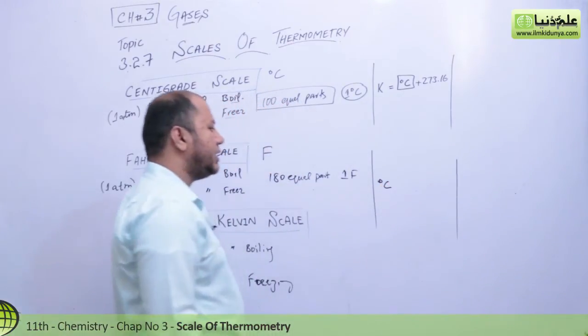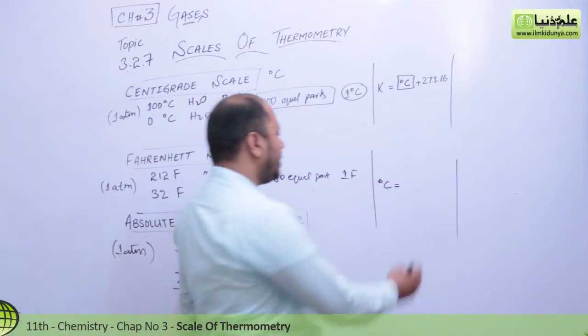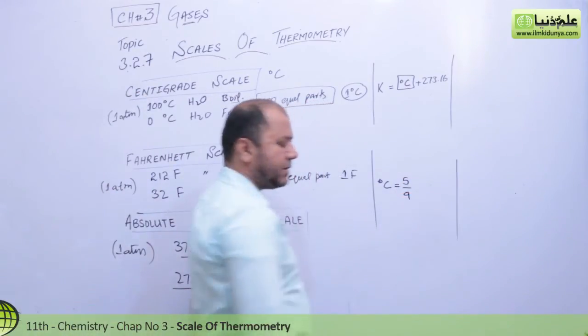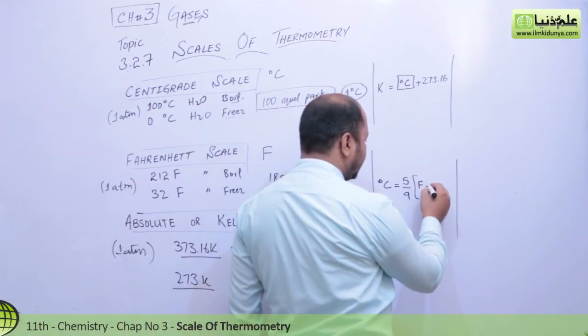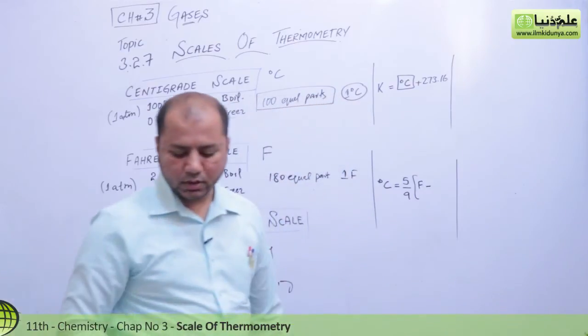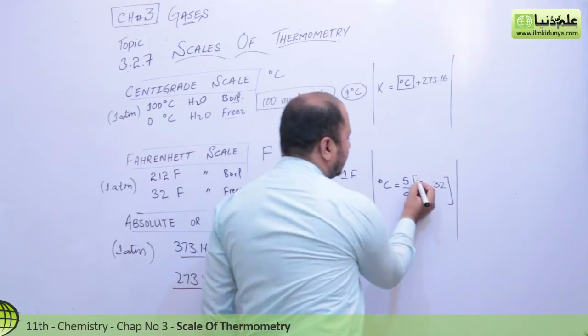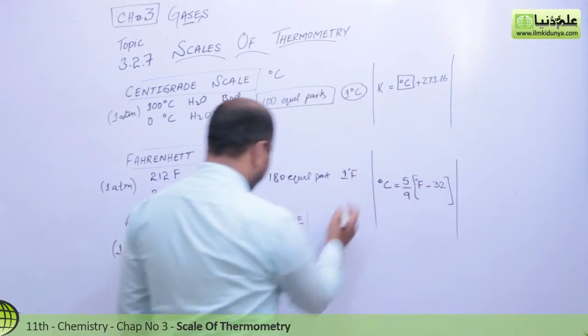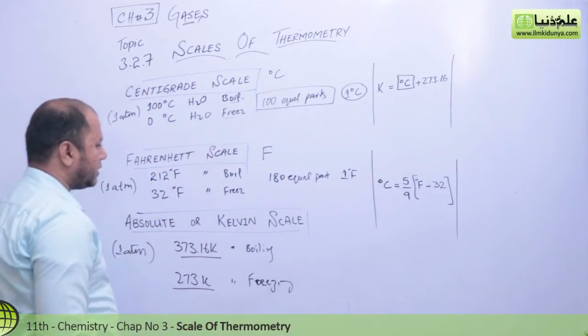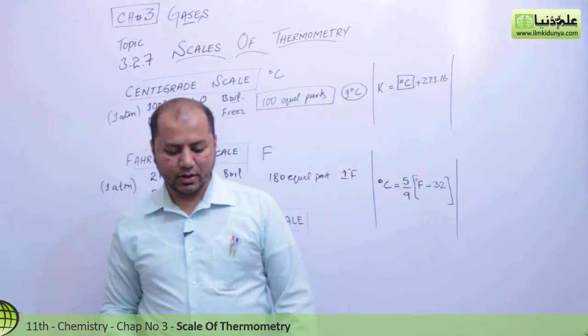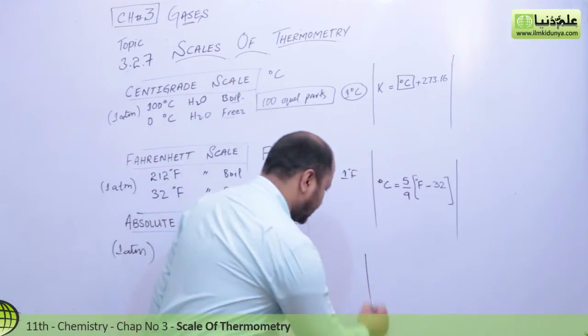The formula is 5/9 multiplied by the Fahrenheit temperature minus 32. So degree Celsius equals 5/9 times (F - 32). I remember now that with Kelvin you don't use the degree sign, but with Fahrenheit you can use the degree sign.